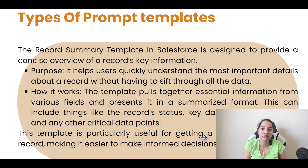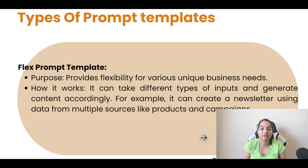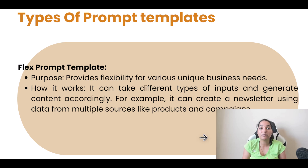So far we've talked about the sales email template, the field generation template, and the record summary template. The fourth one is the flex prompt template. If something is a little more complicated and you want to fetch data from multiple sources, you are going to use the flex template. It provides flexibility for various unique business needs and can take different types of inputs to generate content accordingly. For example, if you have to create a newsletter using data from multiple sources — related or unrelated, like products and campaigns — you use flex templates. If something cannot be achieved using sales email, field generation, or record summary, the last resort is the flex template.